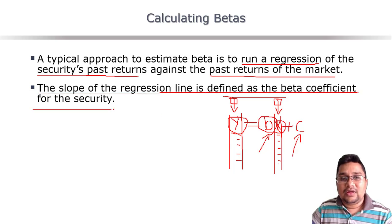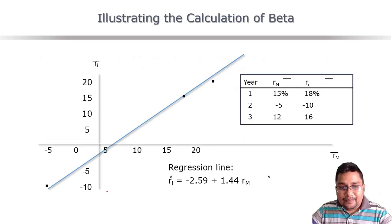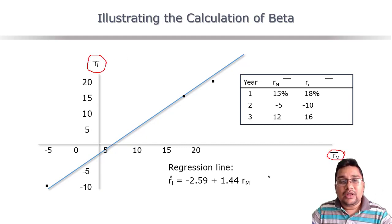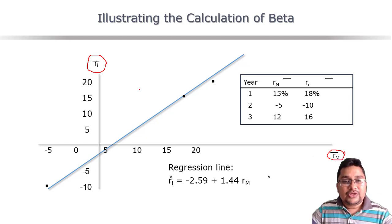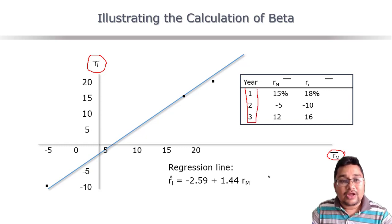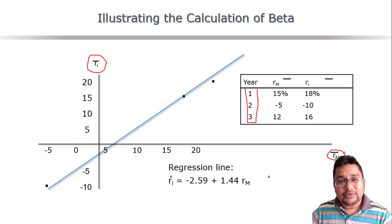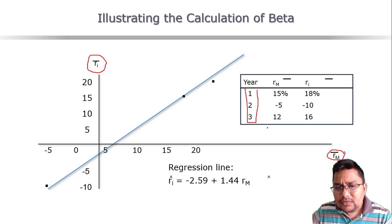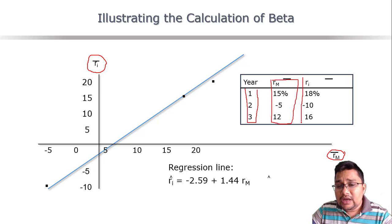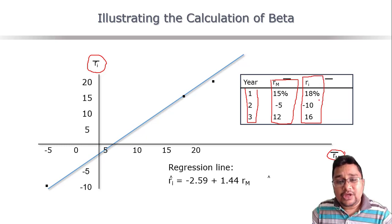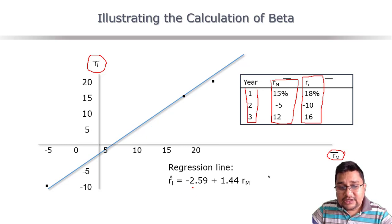Looking at this graphically, the x-axis shows the return of the market and the y-axis shows the return of the individual security. In this simple example, we use three years of monthly returns for both the market and the security. Practically, we take more than three observations and use monthly returns. After running the regression, we get an intercept of -2.59 and a slope of 1.44.